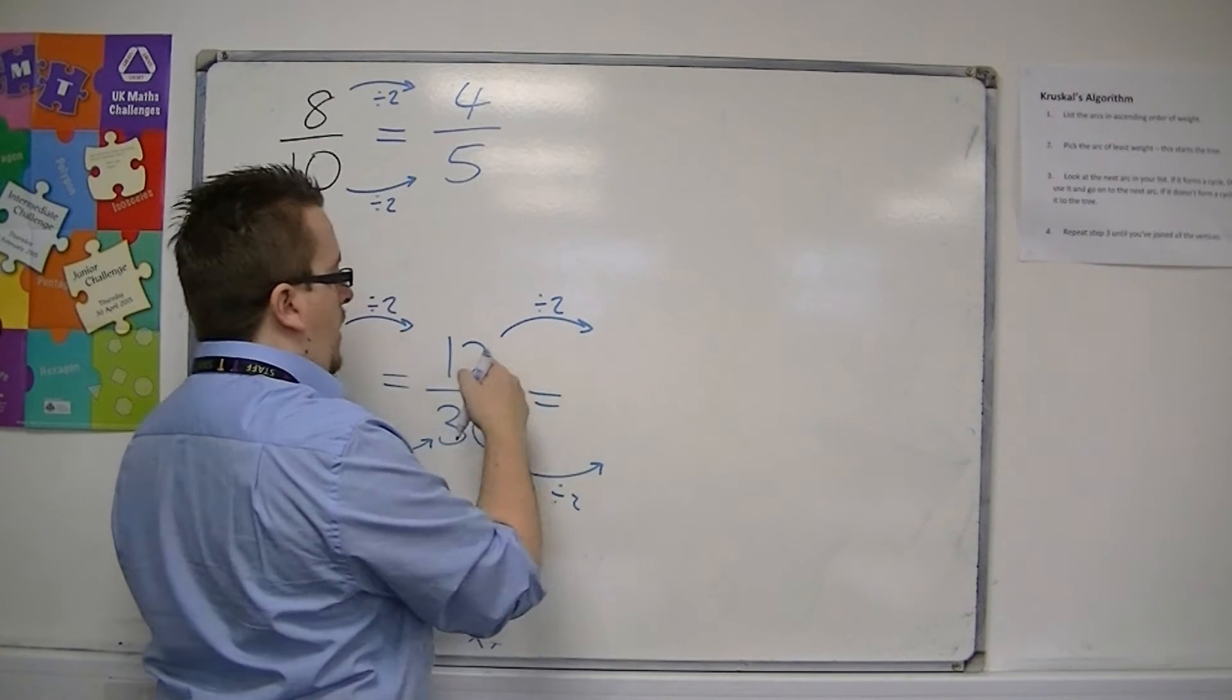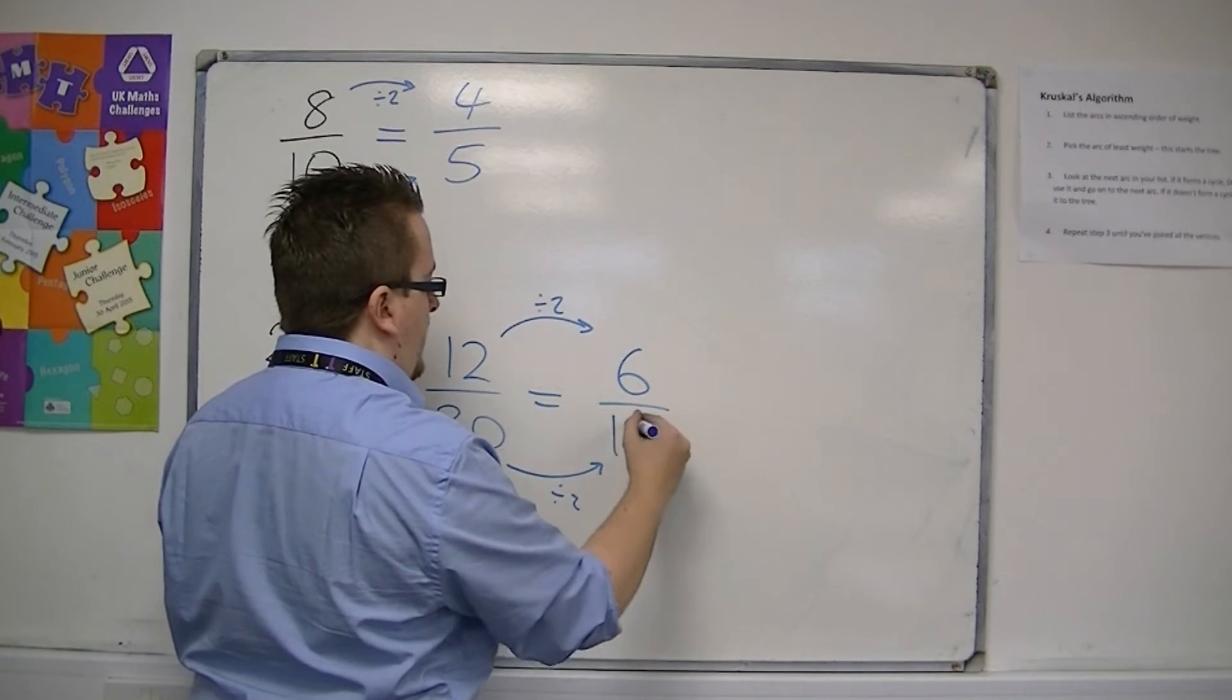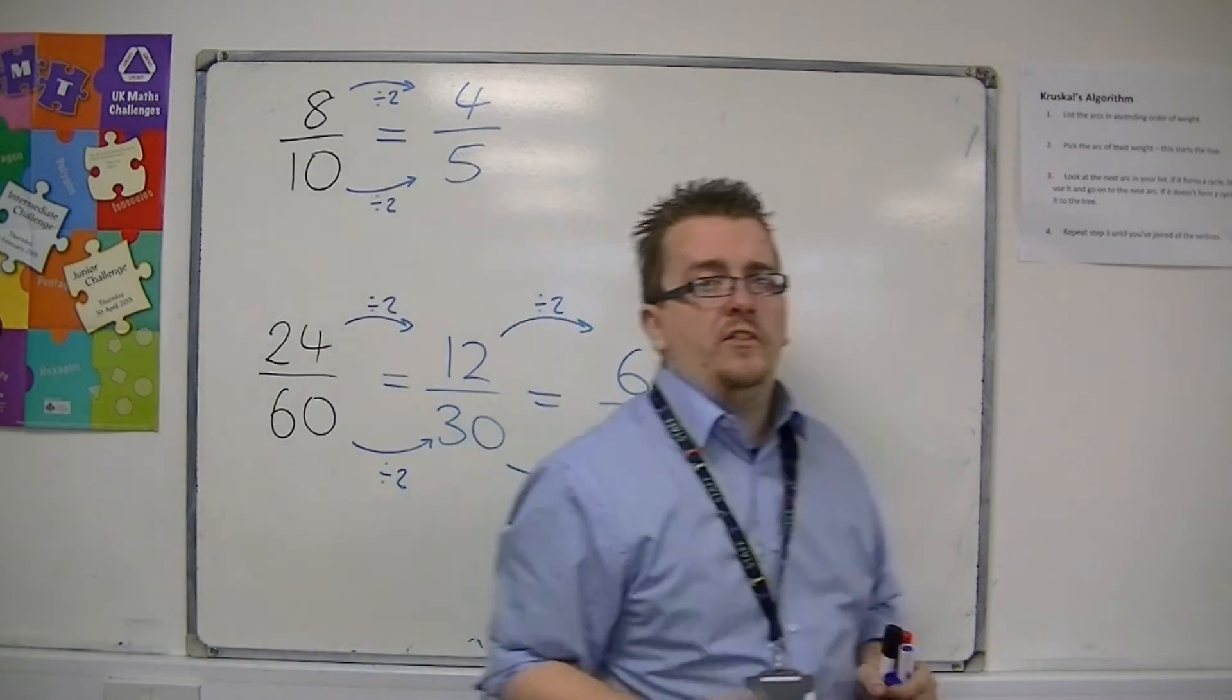So 12 divided by 2 is 6. 30 divided by 2 is 15. So I get 6 over 15.